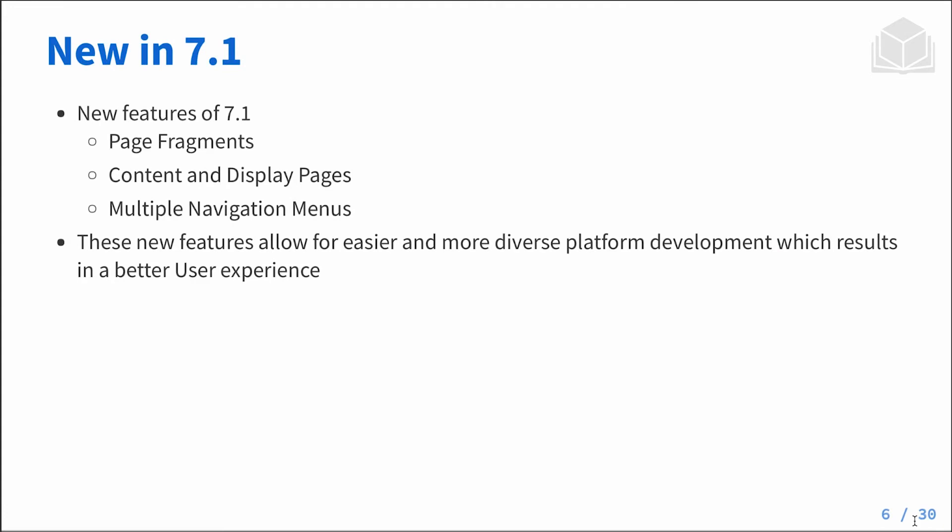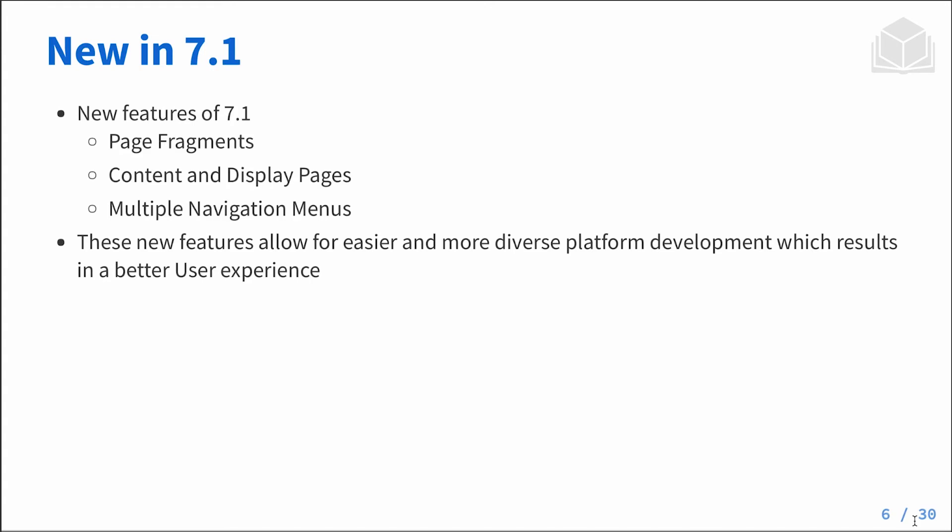We have some new features with Liferay, specifically in 7.1, that are worth highlighting. Some of you may be coming from older versions like 6.2 or 7.0. In 7.1, we have some new content features: page fragments, as well as content and display pages. Page fragments give us another option for content presentation — we can control the HTML, CSS, and JavaScript structure of a specific fragment of the page. Content display pages allow us to take those fragments and display them in a special way, giving marketing teams more control over what text and copy is displayed on those individual fragments. These will be looked at briefly in this course and discussed in more detail in both the content management and front-end developer courses.